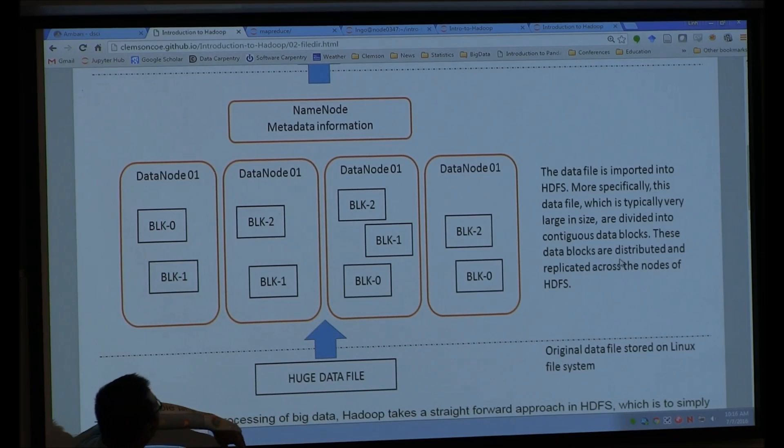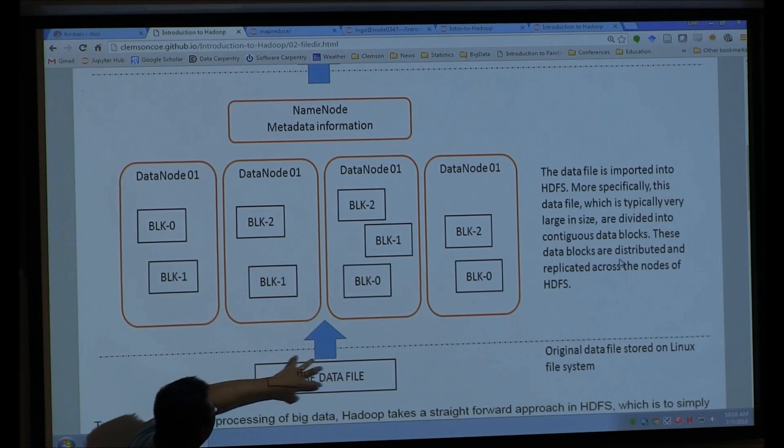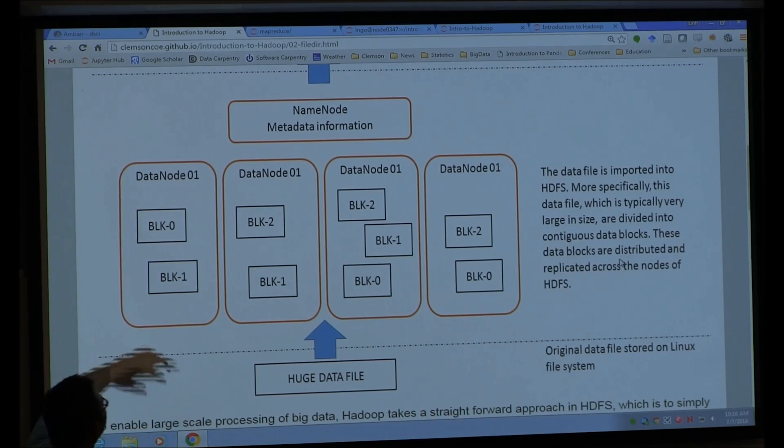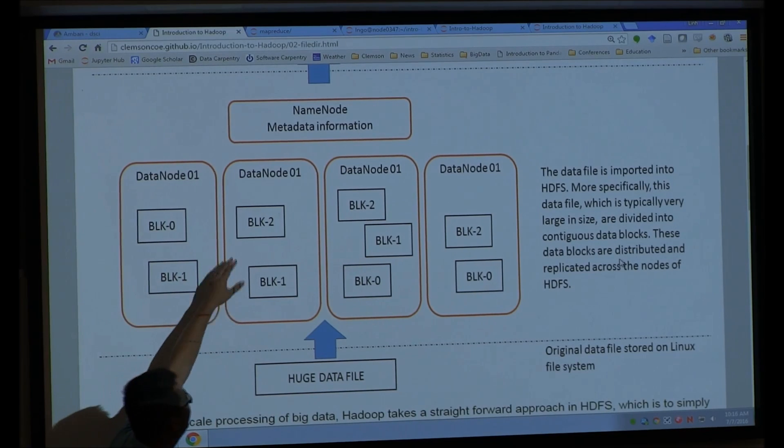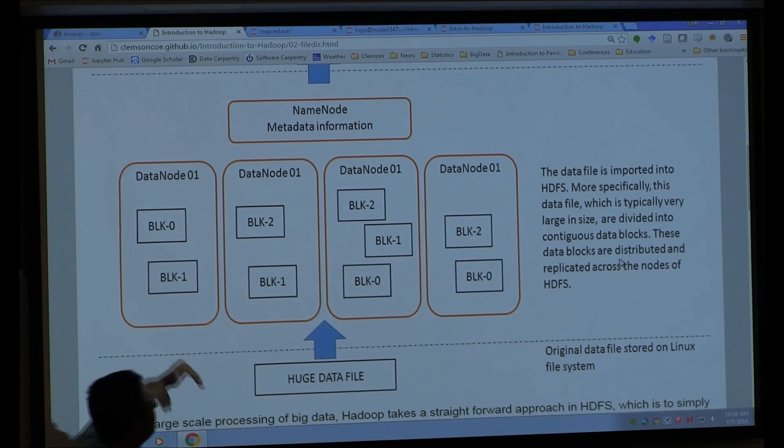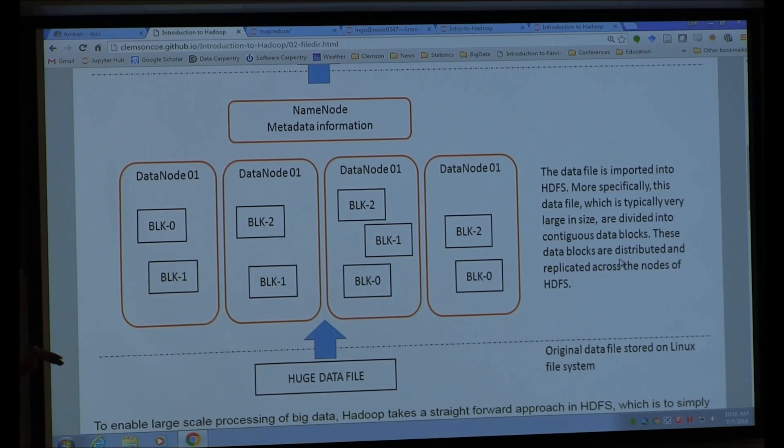So for example, let's say this file can be broken down into three blocks. So this is the first block, 0, 1, and 2. The number of replications is predefined by the HDFS, and users can also define how many replications they want to have.